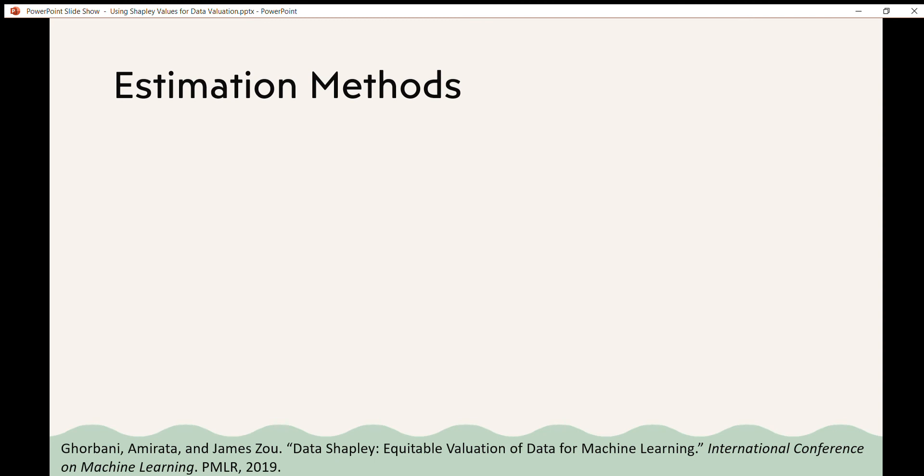So the authors provide some estimation methods. They provide two ways of approximating the Shapley values themselves. The first is a Monte Carlo method. So rather than using every subset in n you can pull a random set of subsets. And the second is a truncation method where if you are adding data points to a subset and the performance metric doesn't change, then you can stop continuing to add values and set the Shapley values for the rest of the data points to zero.